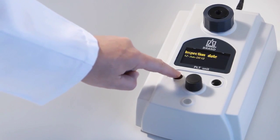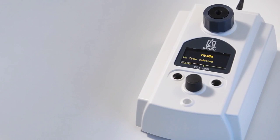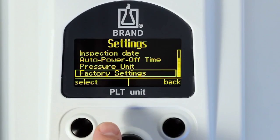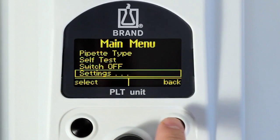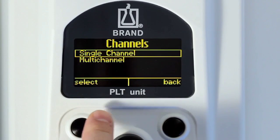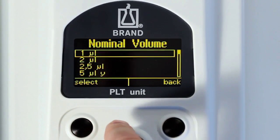First, switch on the unit. Then select the language, the pipette type, and the volume.